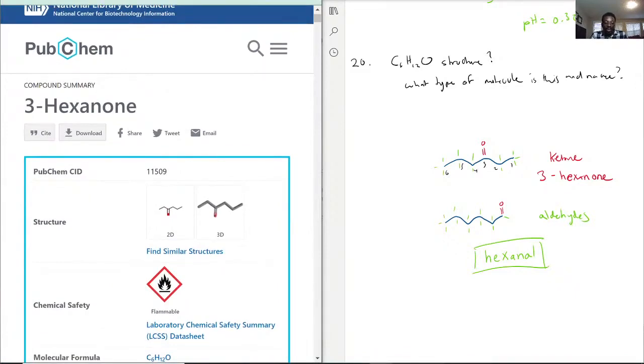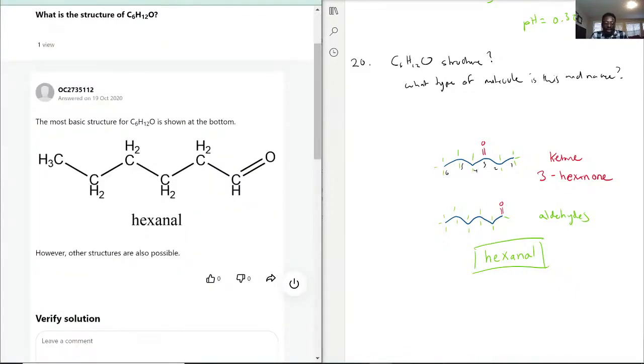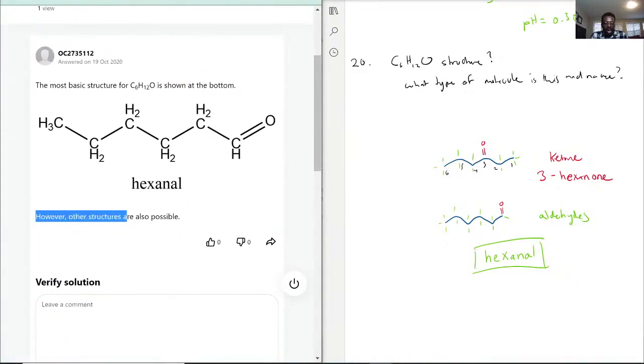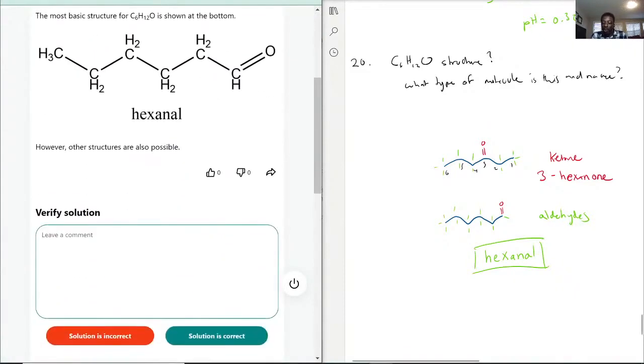The thing is though, is that this question, I would say that this technique is correct because I do mention however other structures are possible. But the thing I have to remember is that this is just one example of a ketone that you can form from that structure.